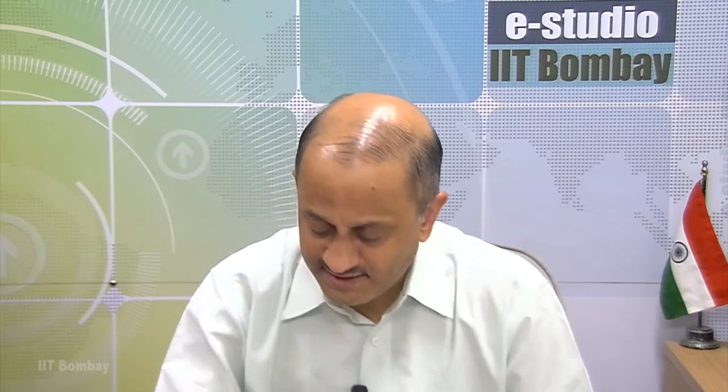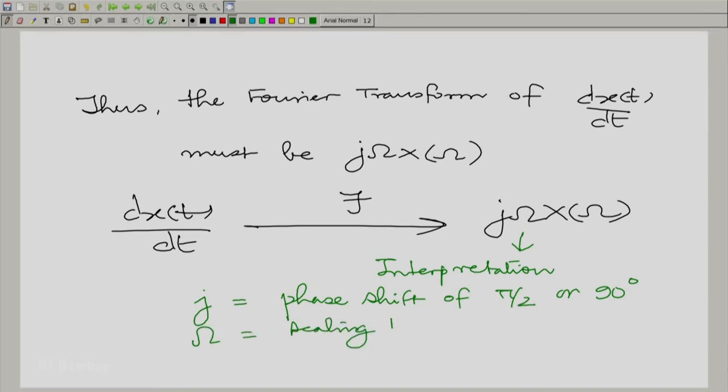Let us interpret this. So, multiplication by j is essentially a phase shift of 90 degrees and multiplication by omega is scaling the amplitude by omega. So, it is not very surprising. Actually, if you look at a sinusoid, take a sine wave. Say for example, take x(t) equal to A times cos(ωt + φ).